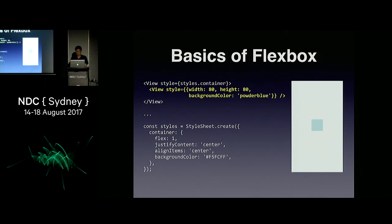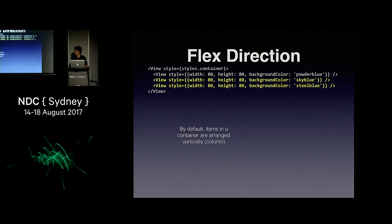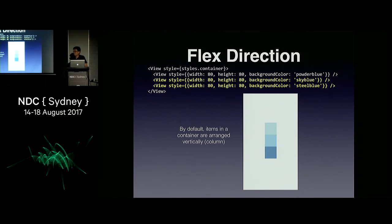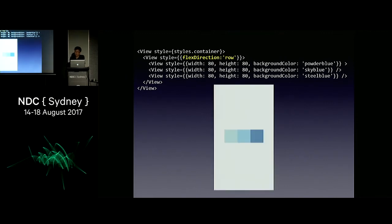What if I add two more views? By default, items in a container are arranged vertically in column format, so now it looks like three squares stacked vertically. If I change the flex direction to row, they arrange horizontally. The default is always column; if I change to row, they line up horizontally.